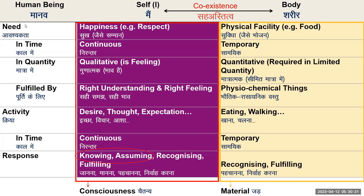Yesterday we did a quick recap of what we had learned in UHV 2 regarding the human being — that the human being is a coexistence of self and body. We can see on the left side in the unit of consciousness that the needs and activities of consciousness show continuity. Our need for happiness is continuous and the activities within us are also in continuity, giving a hint of continuity of the self.